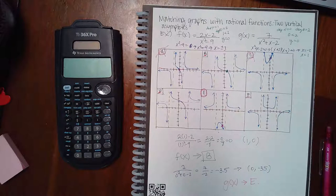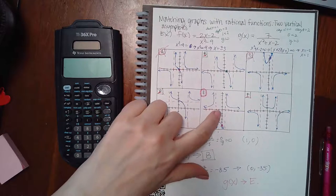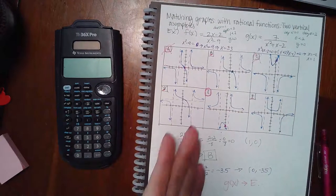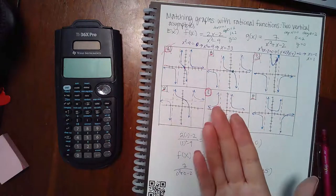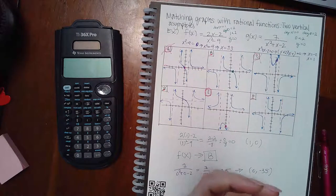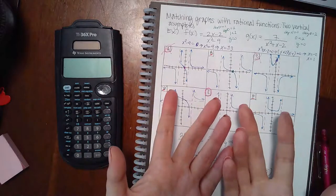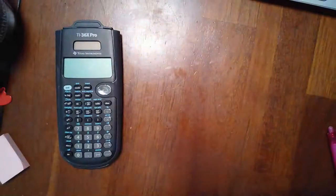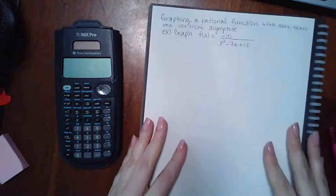Make sure when checking graphs you're looking at the signs of values. Verify the asymptotes first, then verify the points. If two graphs match on one test point, plug in a different value to distinguish between them.